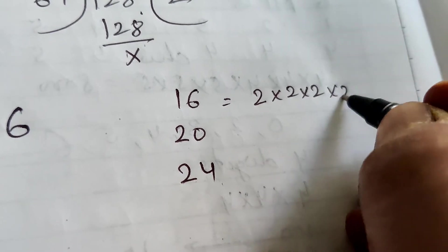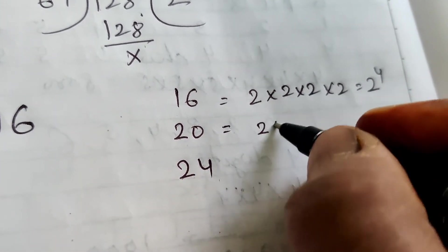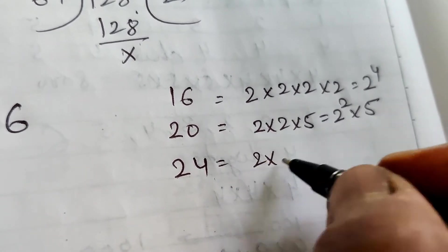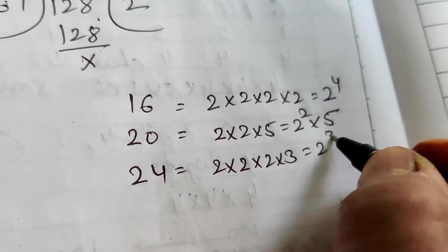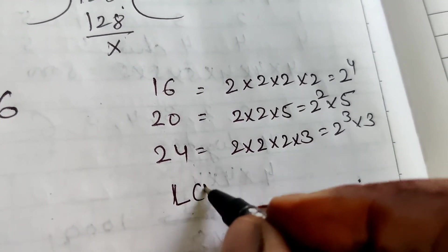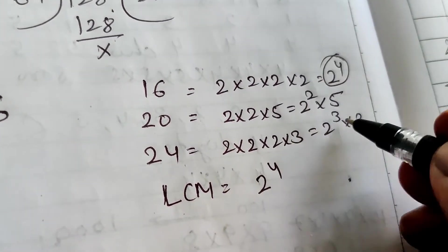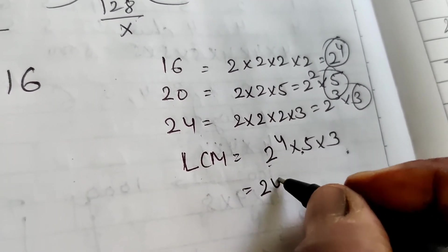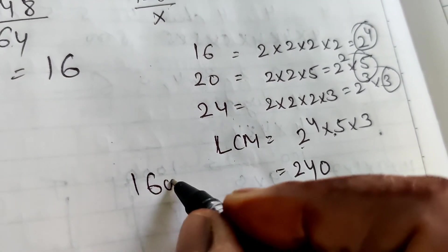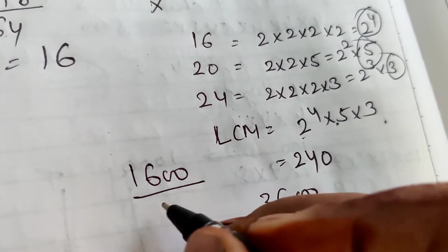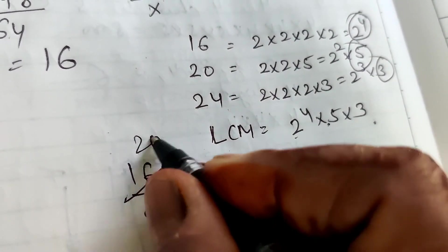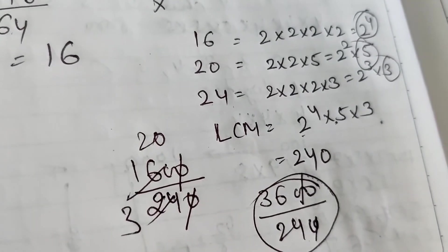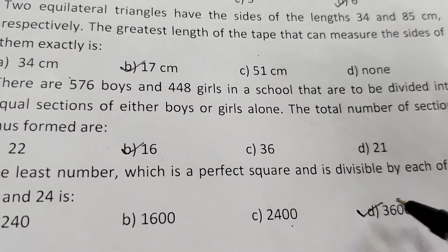24 = 2³ × 3. LCM = 2⁴ × 3 × 5 = 240. Now checking: 1600 ÷ 240 = 20/3, which is not a whole number, so 1600 is not divisible. 3600 ÷ 240 = 15, which is a whole number, and 3600 is a perfect square (60²). The right answer is 3600.